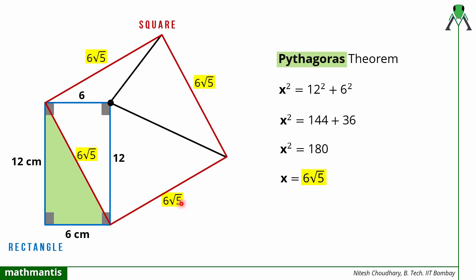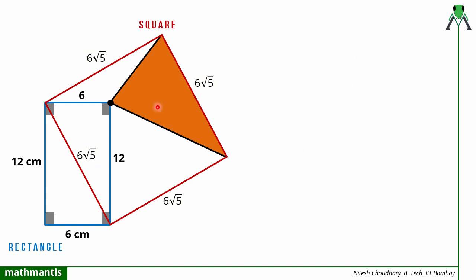So now we have to find this area of triangle. So now in this triangle I can see that I know the base length that is 6 root 5. If somehow I am able to find this height a, which I have defined by a, I can easily find its area: half base multiplied by height.